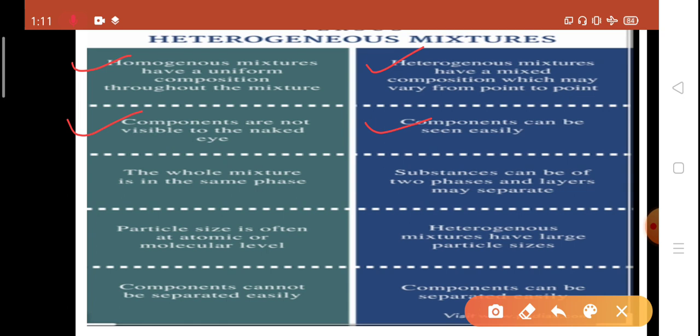But, in heterogeneous mixture, we can easily see the components. The whole mixture is in the same phase. But, in heterogeneous mixture, the substances can be of two phases and layers may separate. The particle size of homogeneous mixture is often at atomic or molecular level. It may be atom or molecules present. But, in heterogeneous mixture, the particles may be large in size. The components cannot be separated easily in homogeneous mixture. But, in heterogeneous mixture, the components can be separated easily.